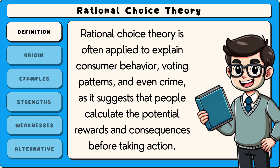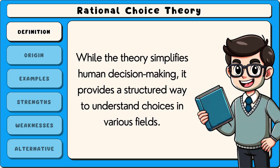Rational choice theory is often applied to explain consumer behaviour, voting patterns and even crime, as it suggests that people calculate the potential rewards and consequences before taking action. While the theory simplifies human decision-making, it provides a structured way to understand choices in various fields.